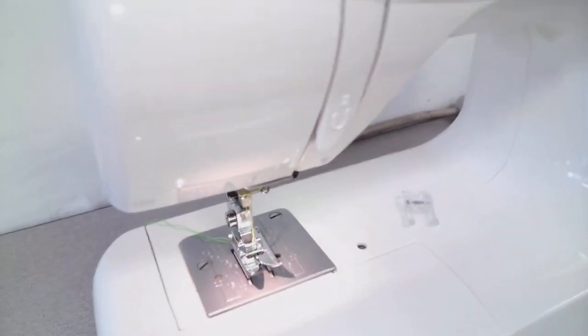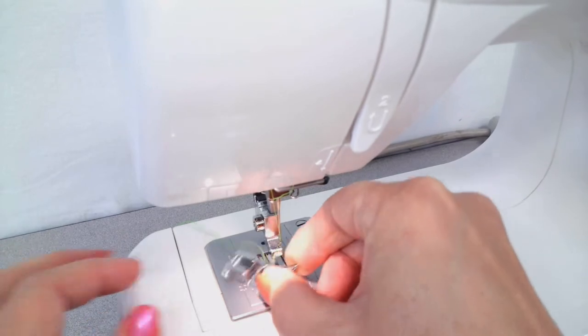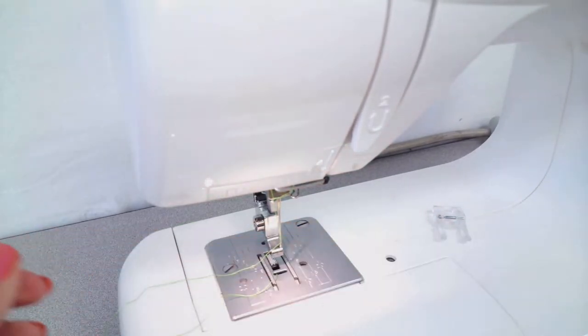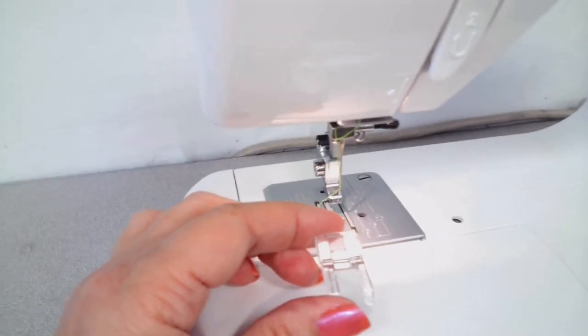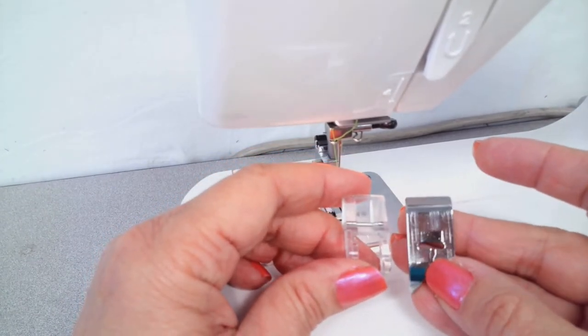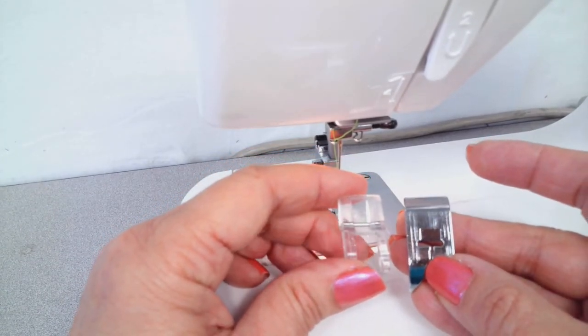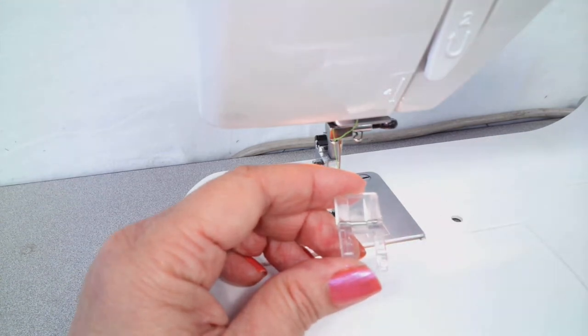I'd like to also talk to you about the foot. I'm going to remove my all-purpose foot and put on my open toe foot. The reason for that is that the standard foot is rather flat on the bottom, and this can get hung up on all the stitches when you're doing a satin stitch or any kind of decorative stitch where you're putting down a lot of thread.